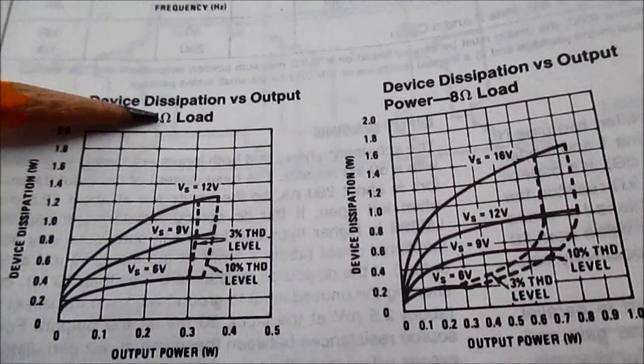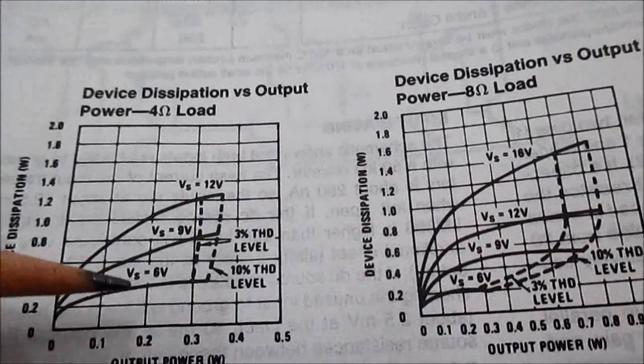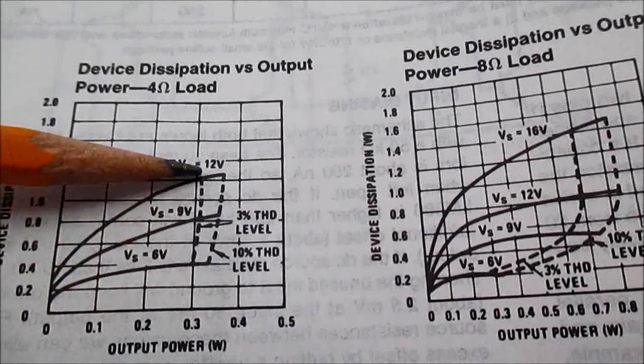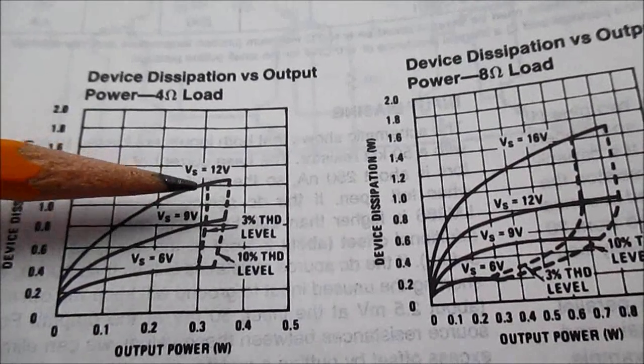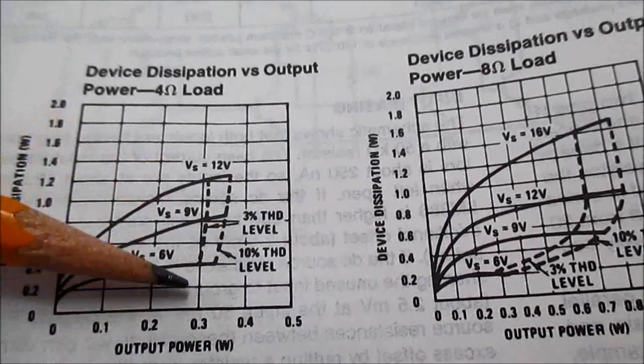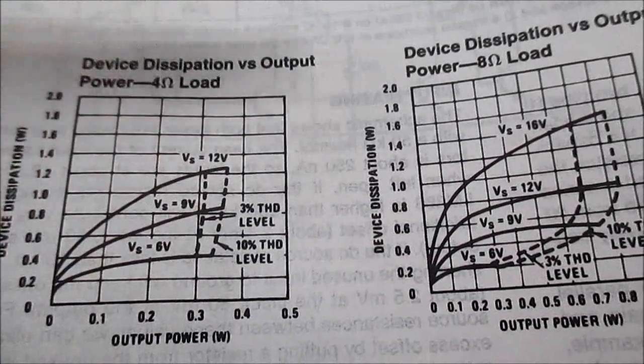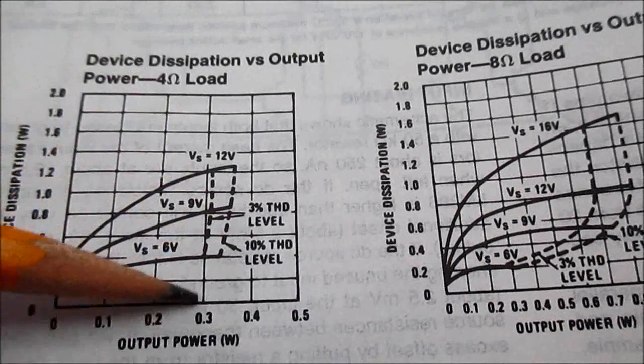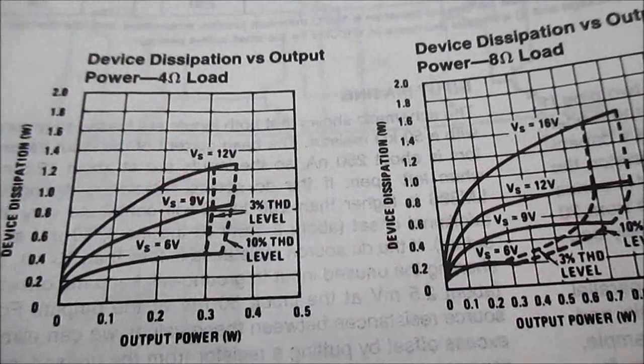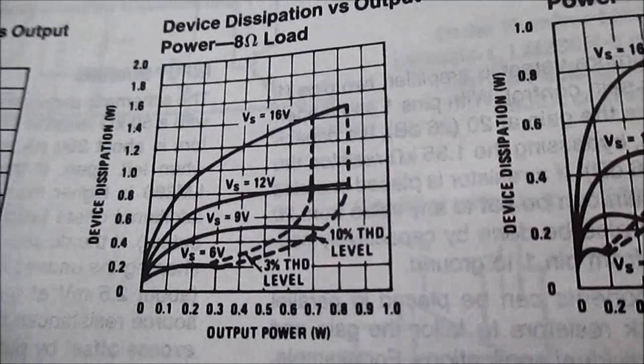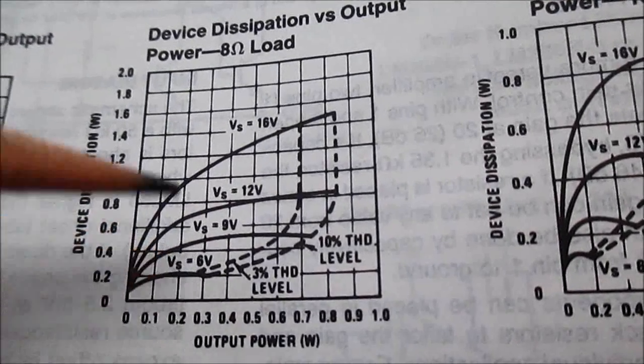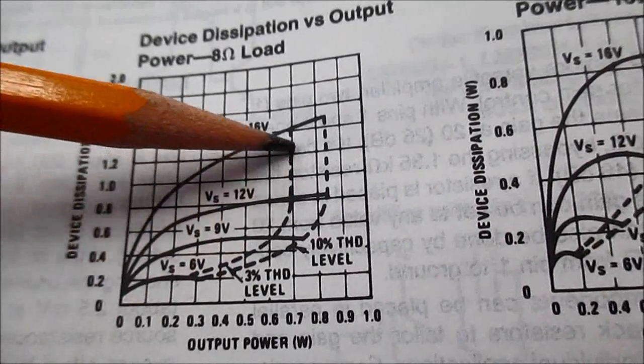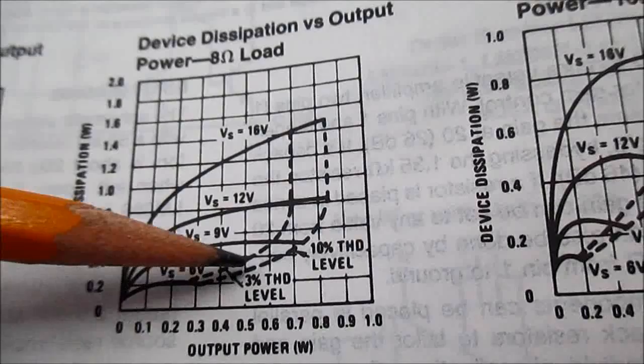If you look here with a 4 ohm load, the output power, you can see going from 6 to 9 and up to 12, the output power does not change. Maybe just a tiny little bit. But normally when you increase the supply voltage, you should see a huge increase. If we're going from 6 volts to 12 volts, we should see about four times the output power. But we're seeing nothing here. And even with an 8 ohm load, you can see the huge increase going from 6 to 9 volts. But when you go from 9 to 12, it's not that much. It starts to flatten out again because it's current-starved.